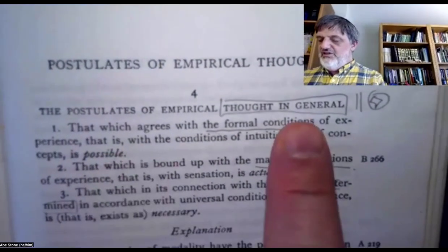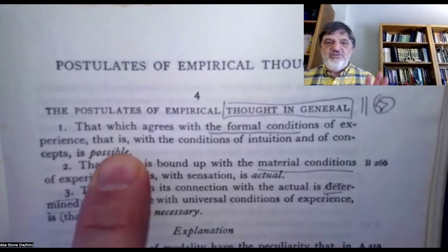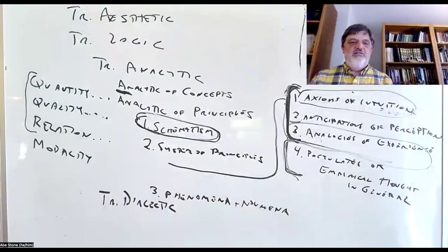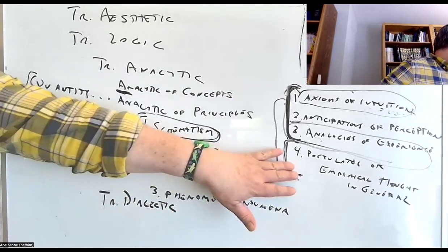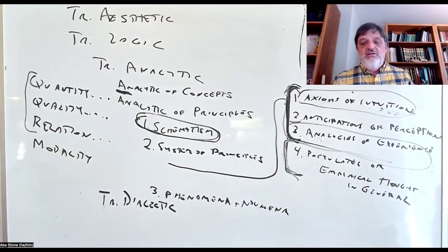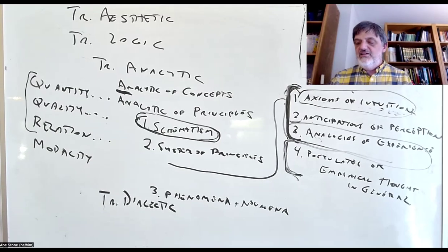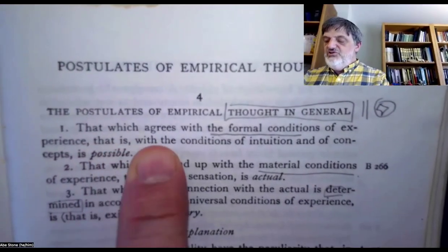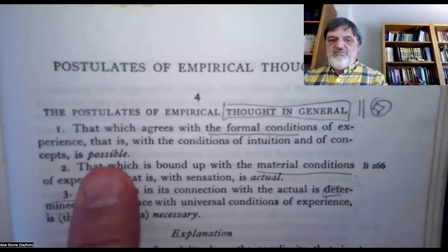Here are the postulates of empirical thought in general. The first postulate — the postulate of possibility — says: that which agrees with the formal conditions of experience, that is, with the conditions of intuition and of concepts, is possible. The second postulate — the postulate of actuality — says: that which is bound up with the material conditions of experience, that is, with sensation, is actual.